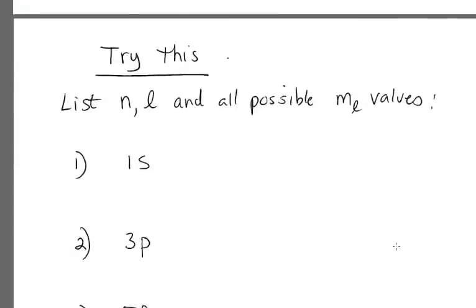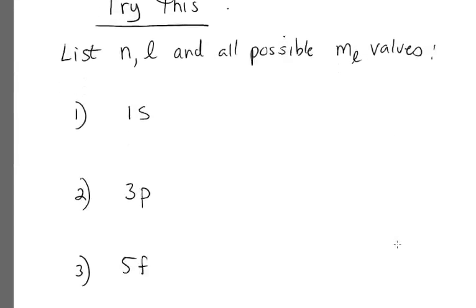So let's try some practice here. For these designations, I want you to list the n, the l, and the m sub l, all possible m sub l values for each of these.